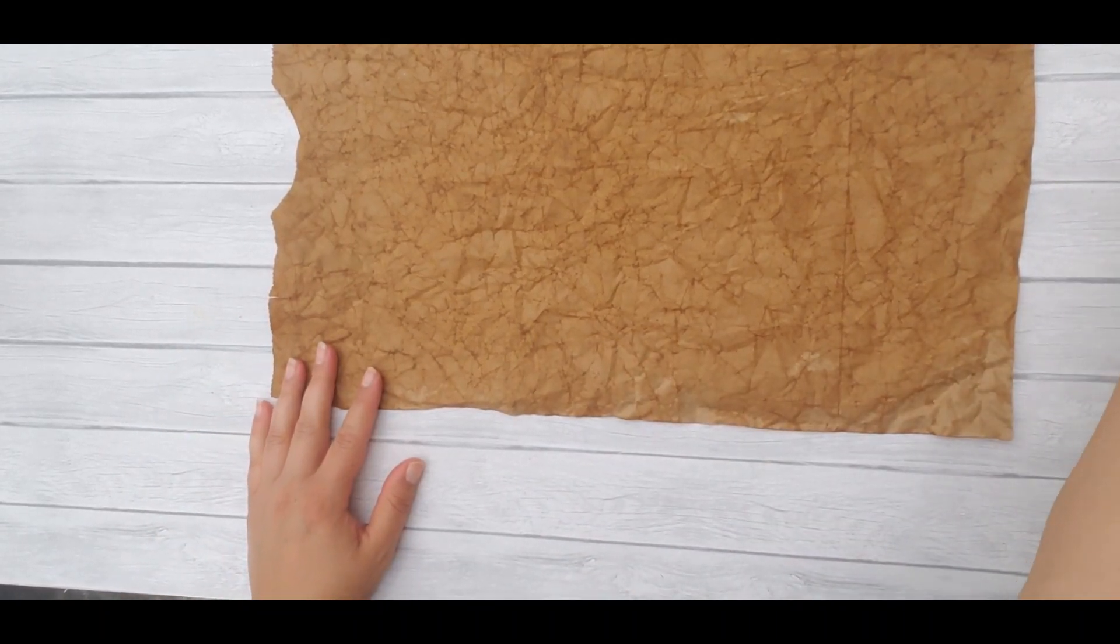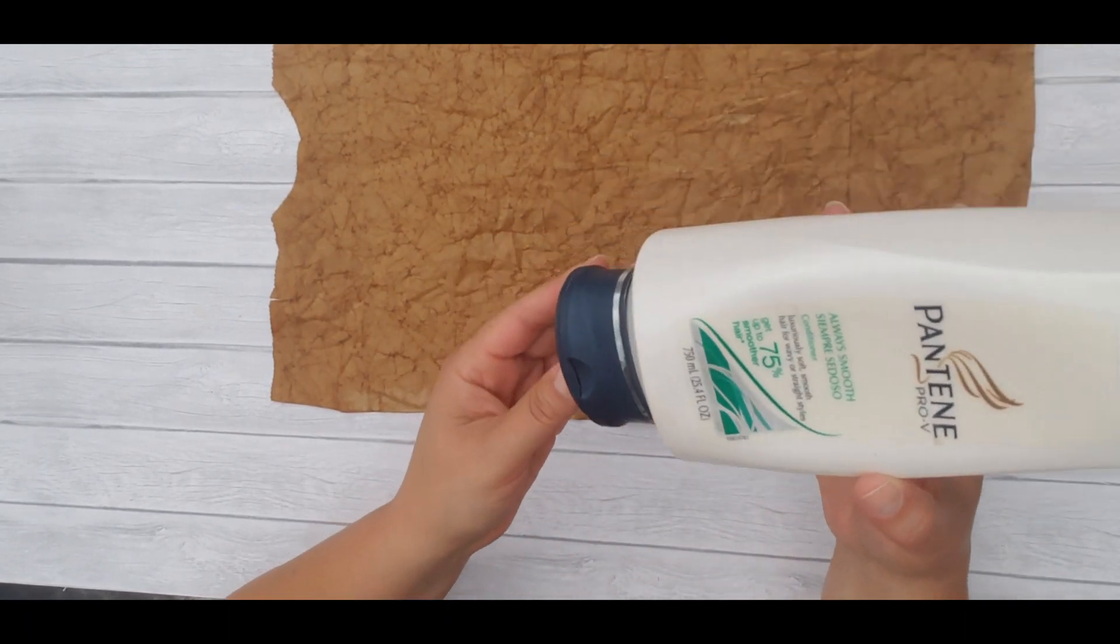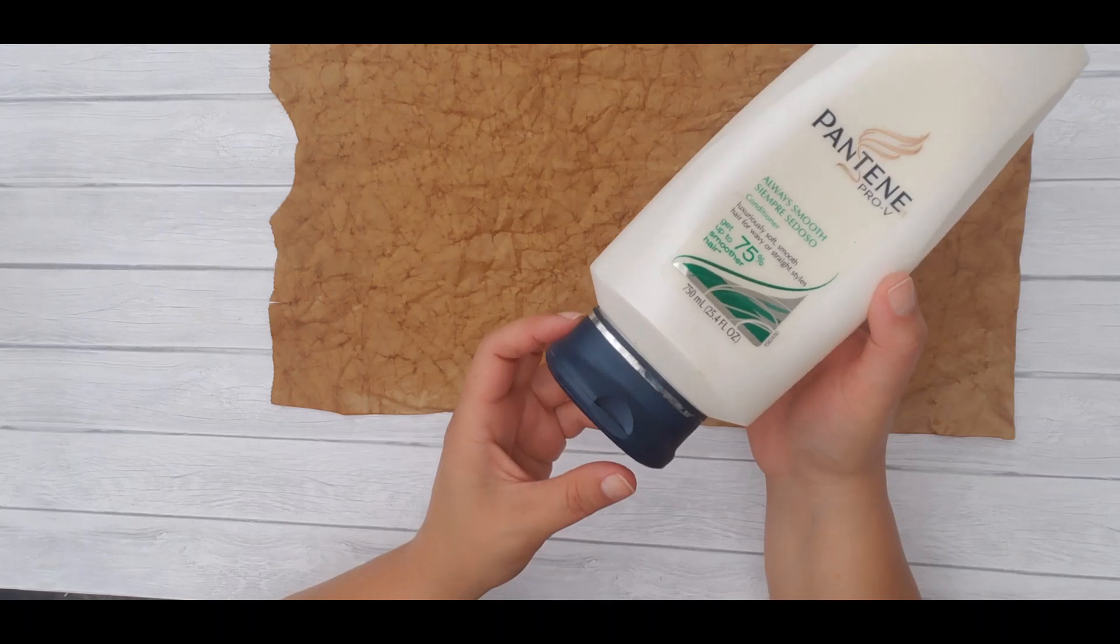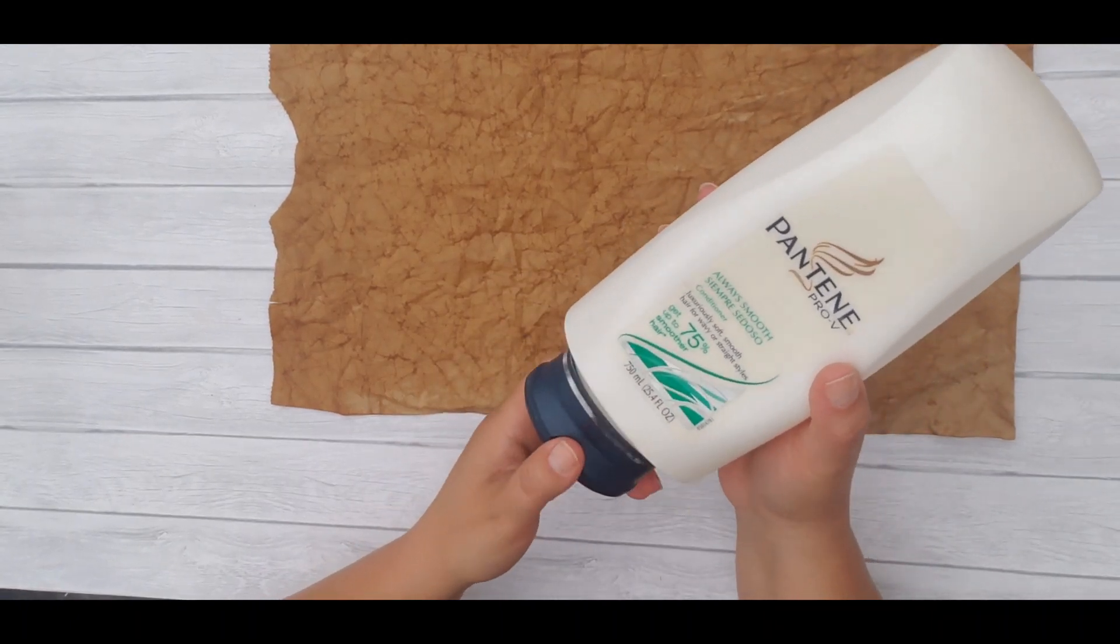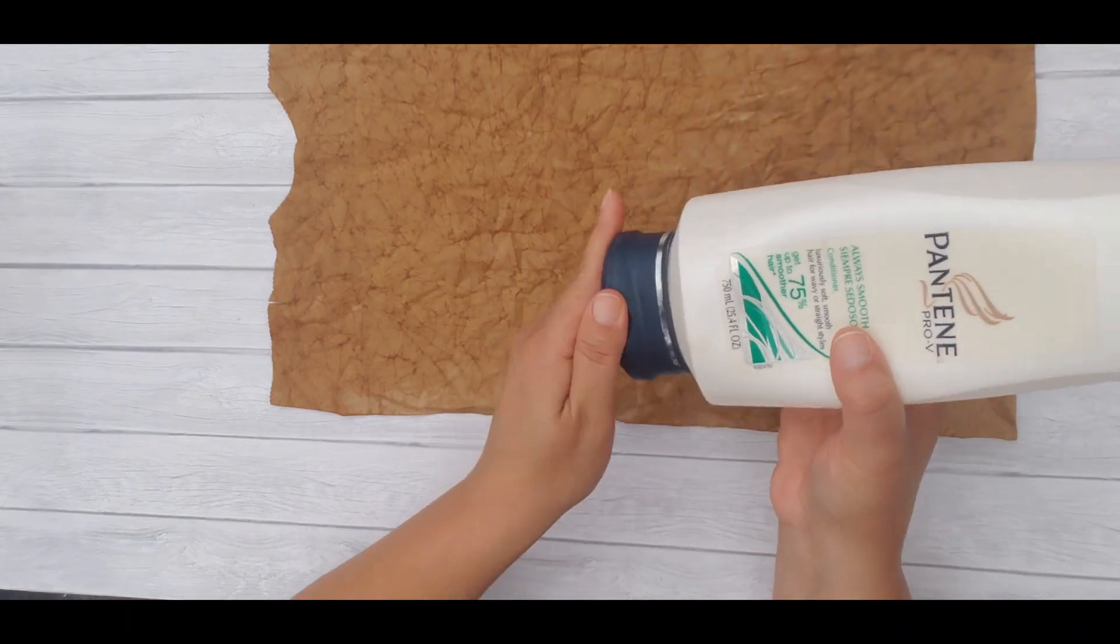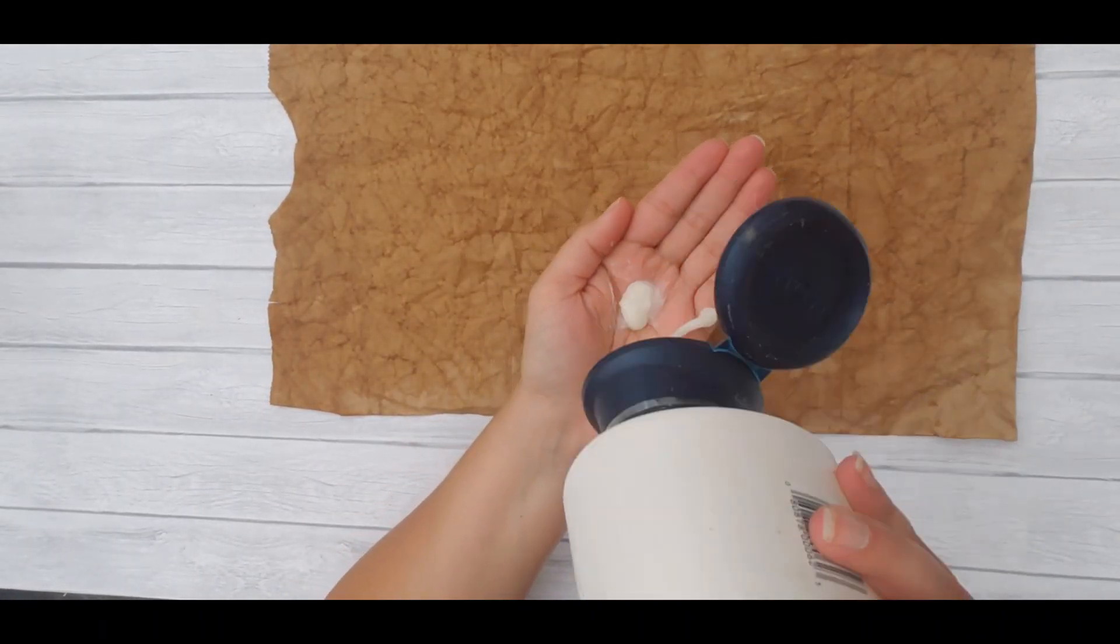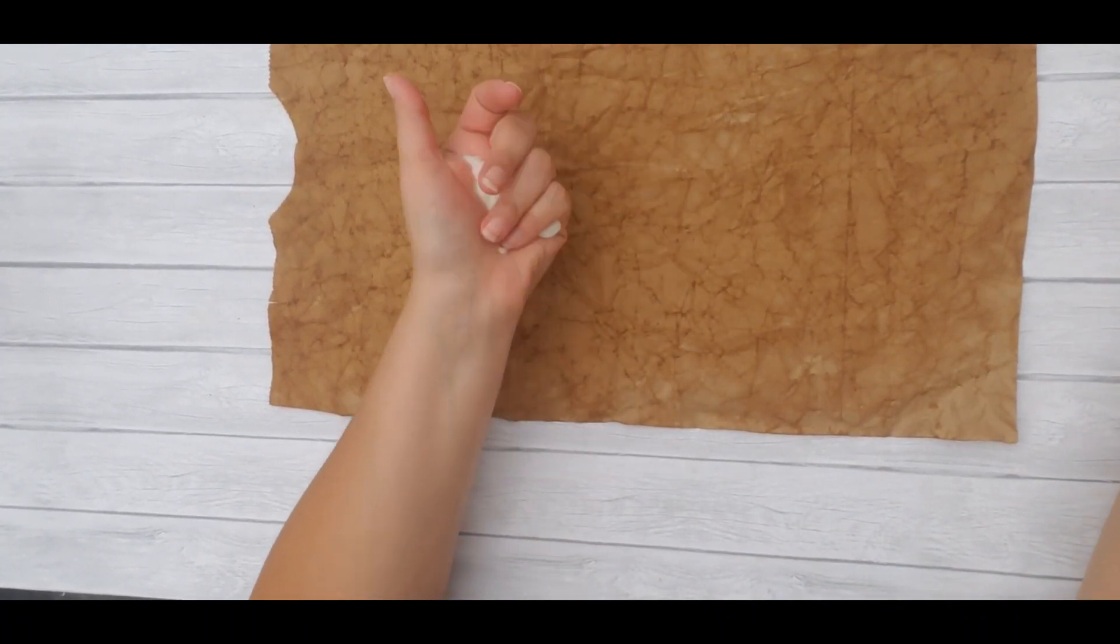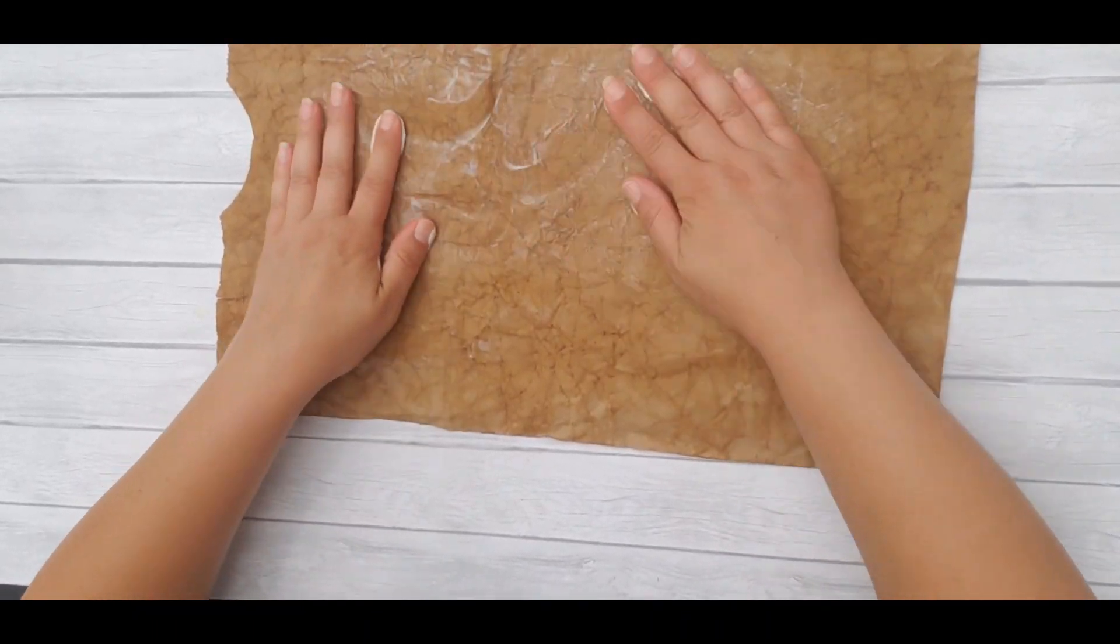Next I'm bringing in my main ingredient. This is just a hair conditioner. Brand doesn't matter. All it matters is that it's a conditioner and not two-in-one. No shampoo here. Just a conditioner. And I am going to put some in my hand. This is a good amount to start. And I'm going to condition my paper.